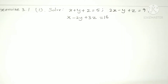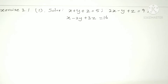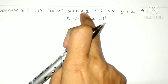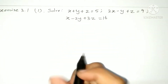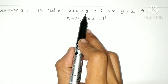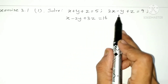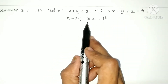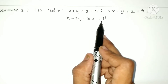Let's look at the first sum. In the first sum, we can see this method — it's a little different. Let's look at the third equation. So, x plus y plus z is 5. 2x minus y plus z is equal to 9. x minus 2y plus 3z is equal to 16.